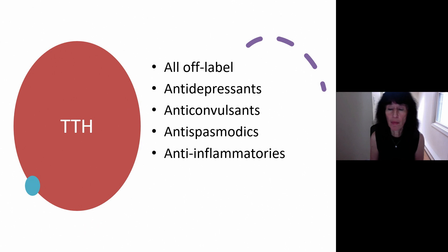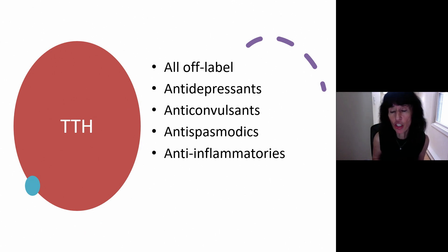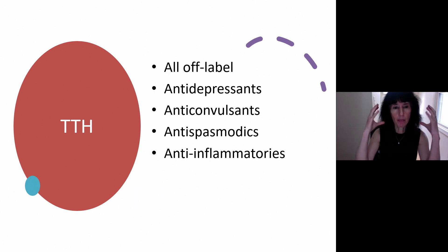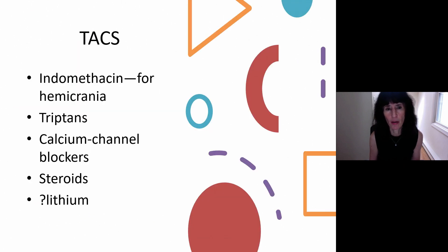For tension-type headaches, everything is off-label — nothing is labeled specifically. Antidepressants such as the tricyclics, anticonvulsants sometimes used, antispasmodics with the thought that muscle spasm is a component, and anti-inflammatory medications. Ibuprofen for somebody with an occasional tension-type headache may be just fine and all they need.